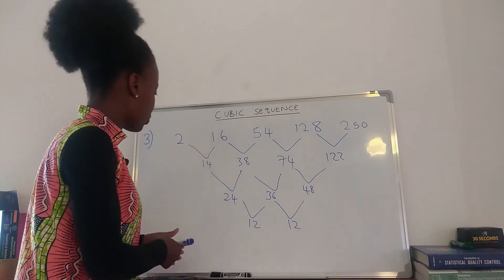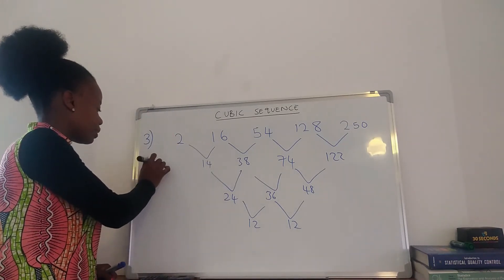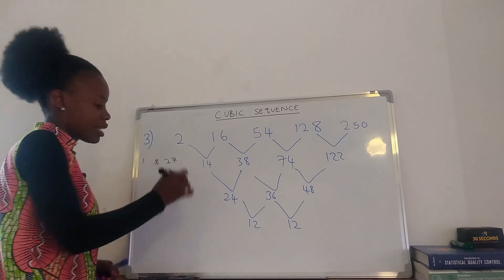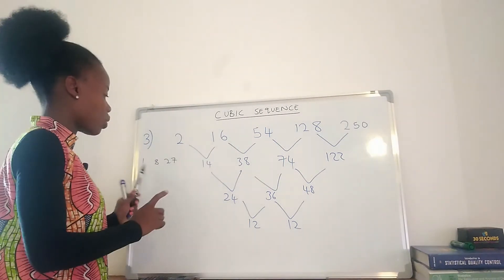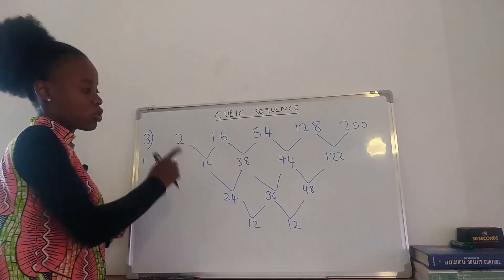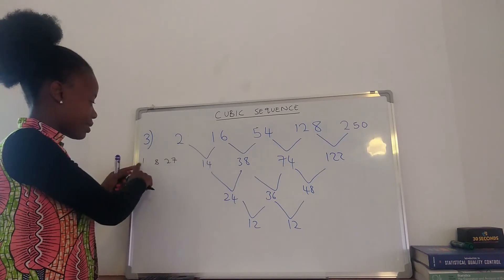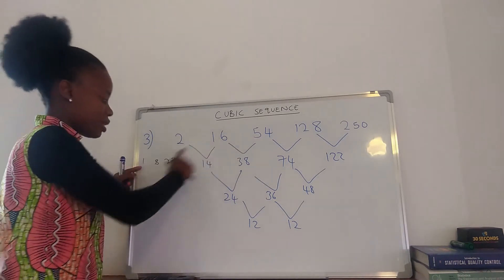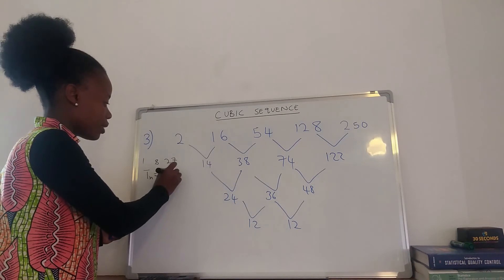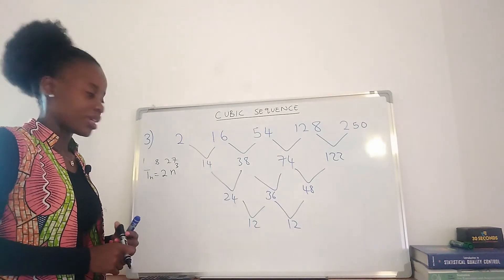Using trial and error: the standard cubic numbers are 1, 8, 27. Comparing to our sequence 2, 16, 54, 128, 250, each term is exactly twice the cube number. So the answer is simply 2n³.